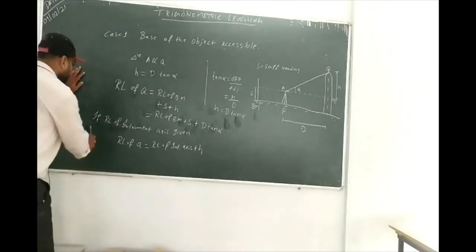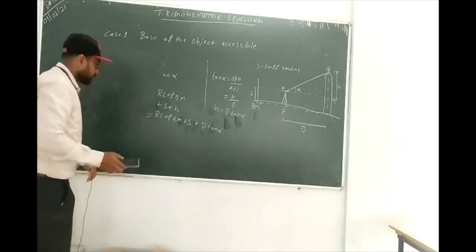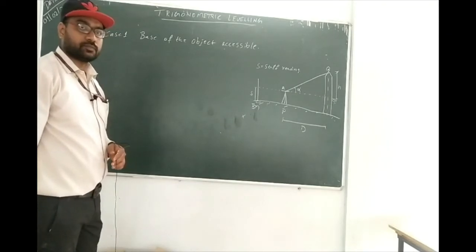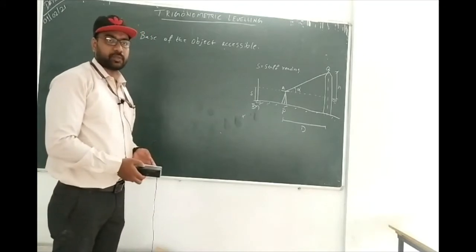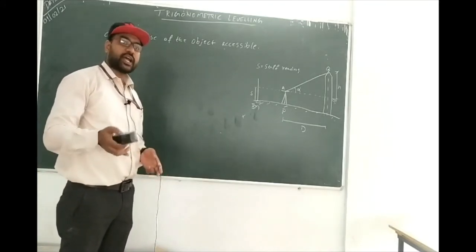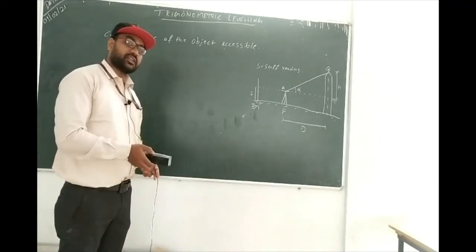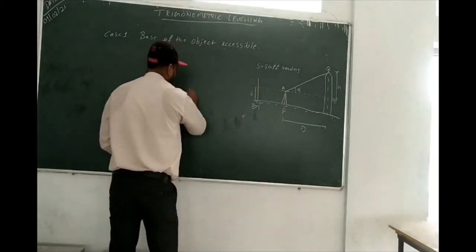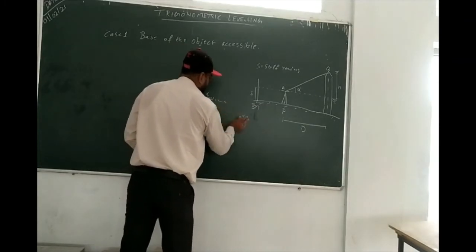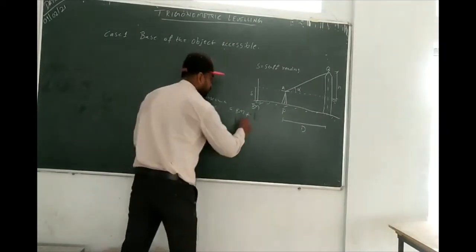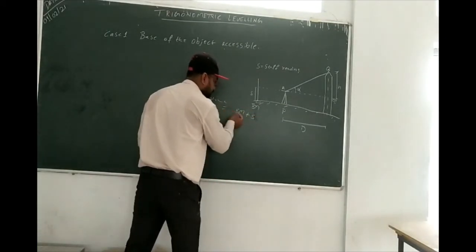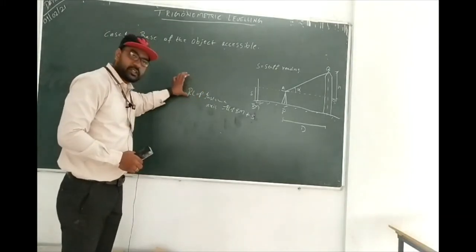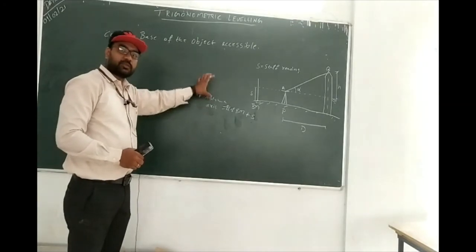This is case one. The notes have already been forwarded. If benchmark is not given and instrument RL is given directly, just add it: RL of instrument axis = RL of benchmark plus staff reading. If they give RL of instrument axis directly, substitute RL of instrument axis plus h. That's all.